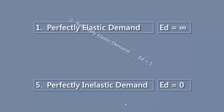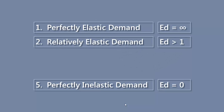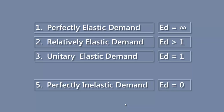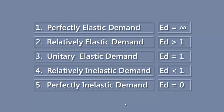In between these two, we have relatively elastic demand. In this case, elasticity value is greater than one. Unitary elastic demand is identified with the elasticity value equal to one. When the value of elasticity is less than one, the demand becomes relatively inelastic, popularly known as relatively inelastic demand.